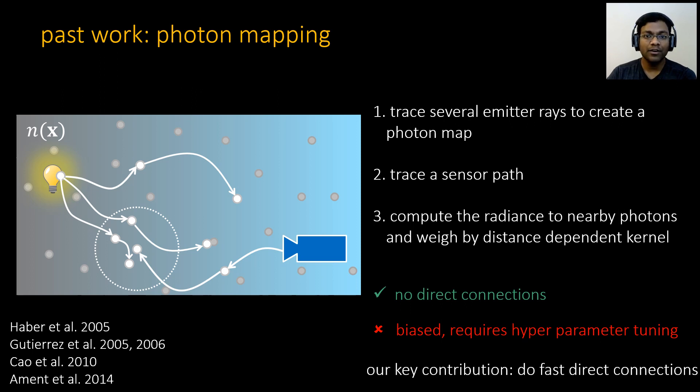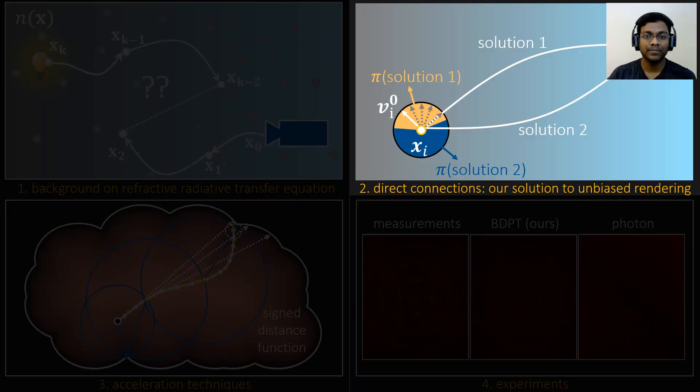And instead, we propose to solve the problem by finding the curve that directly connects the source and sensor sub-path exactly. We will next derive the curve for direct connections.